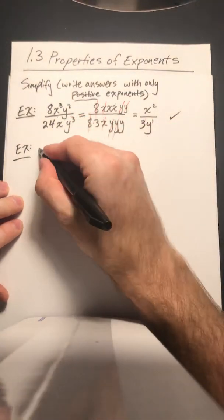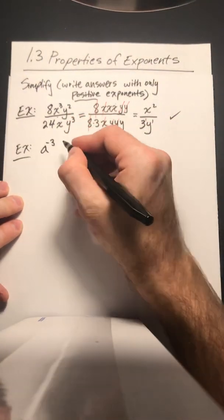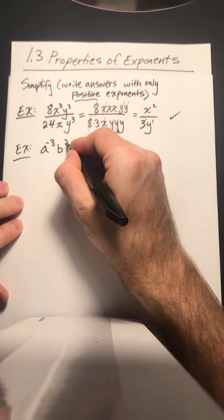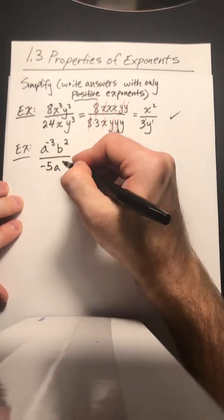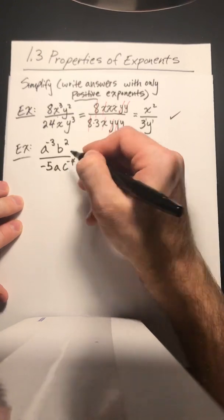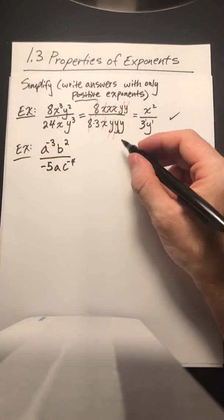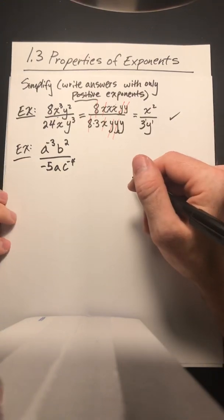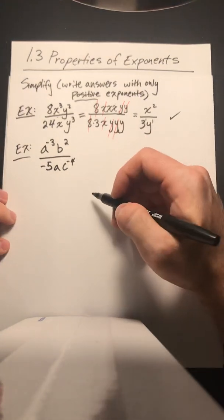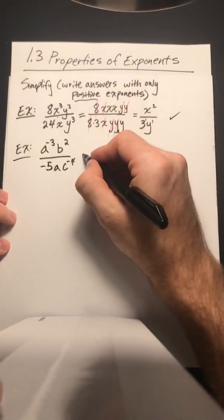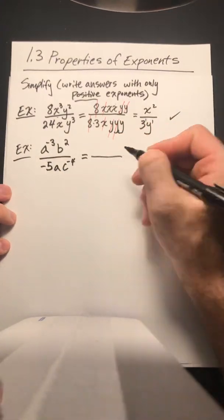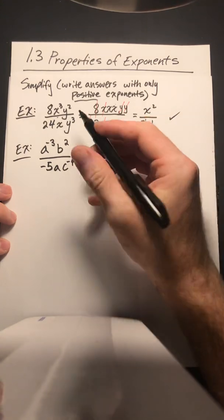So a to the negative 3 b squared over negative 5 a c to the negative 4. So just like the last one, first thing I want to do, I want to make sure that none of my exponents are negative. So I'll just start with each part here and work my way through it. So I'm going to go ahead and write my fraction out.